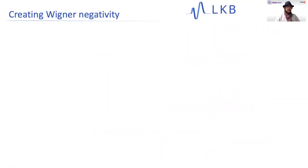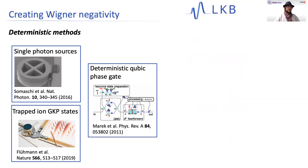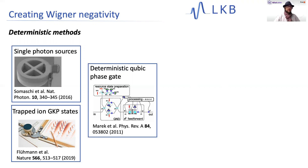Basically, you have two main approaches. One is the deterministic approach, which is quite challenging but easy to explain. Basically, what we want is to push a button and have a state with a negative Wigner function come out. A very simple example for this are quantum dots — single photon sources — where we really produce a single photon Fock state on demand. This is reasonably recent technology, and of course there are also many other examples where we generate much more exotic states on demand.